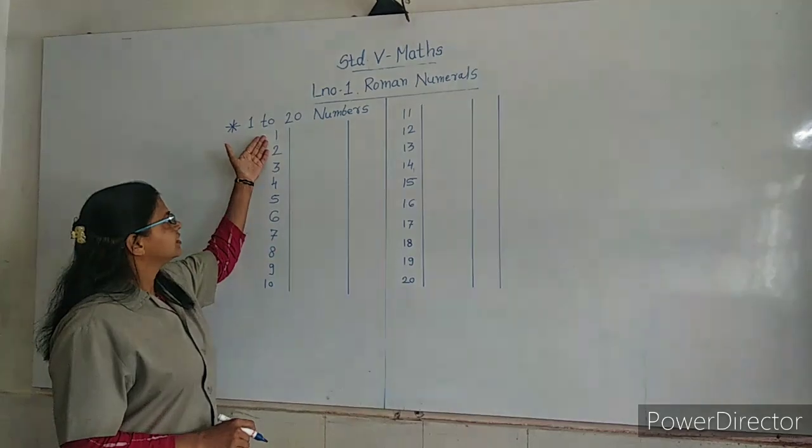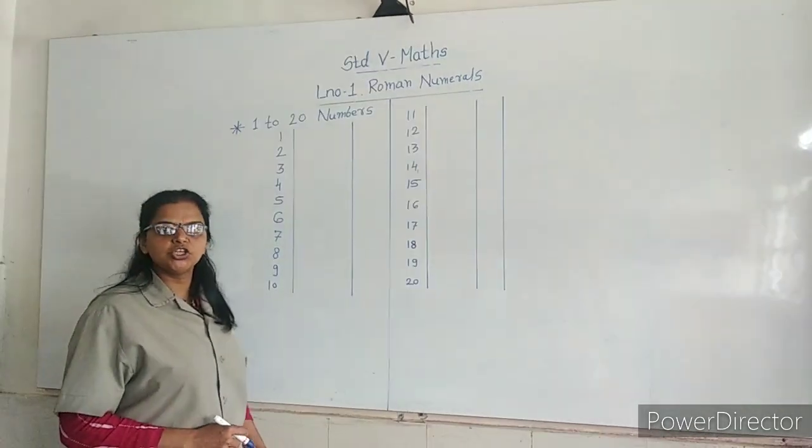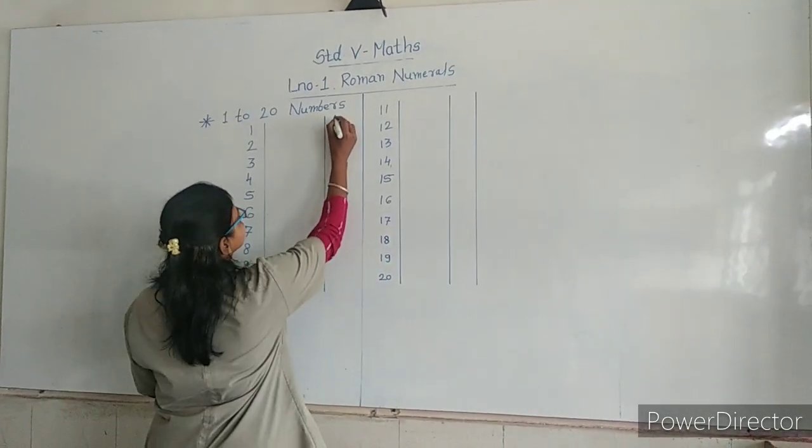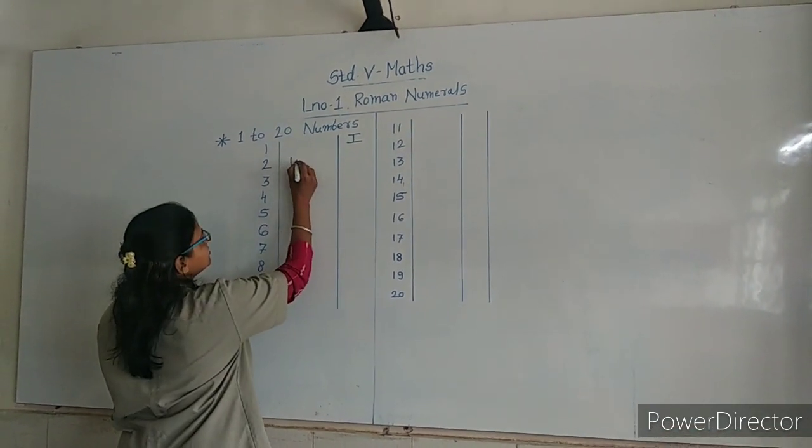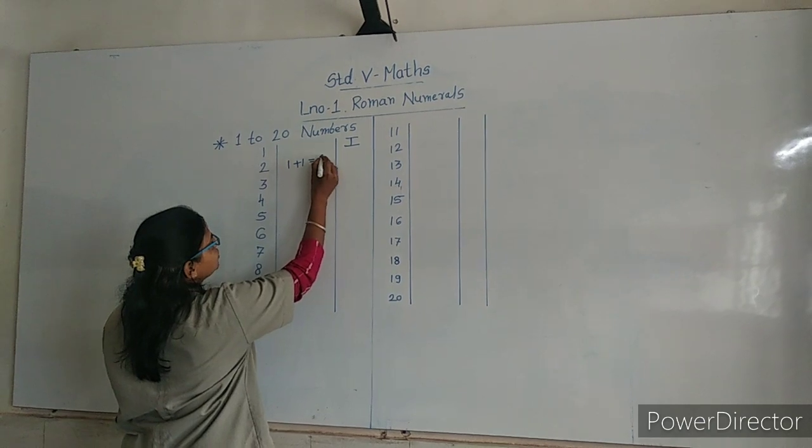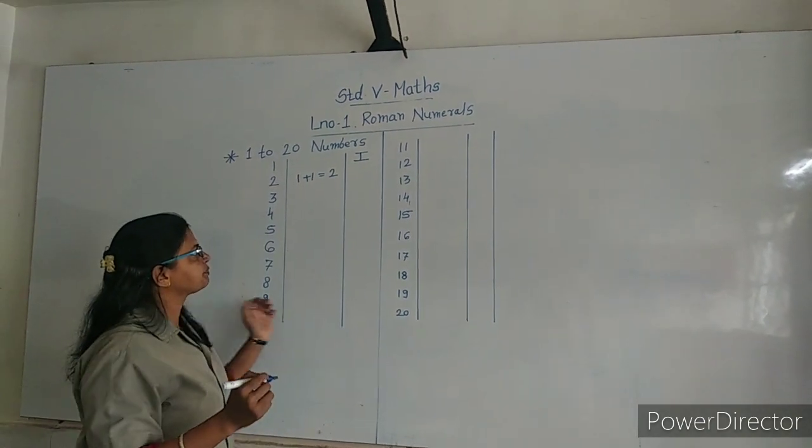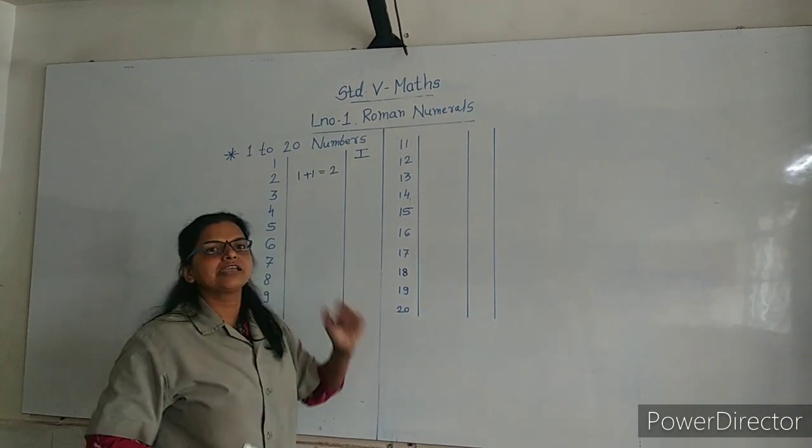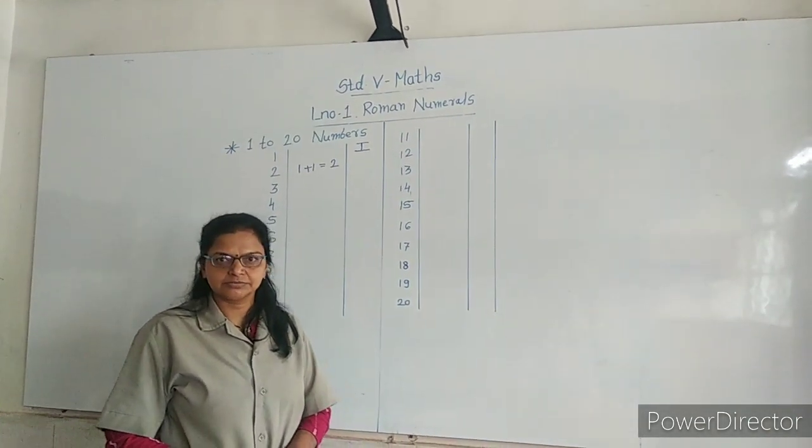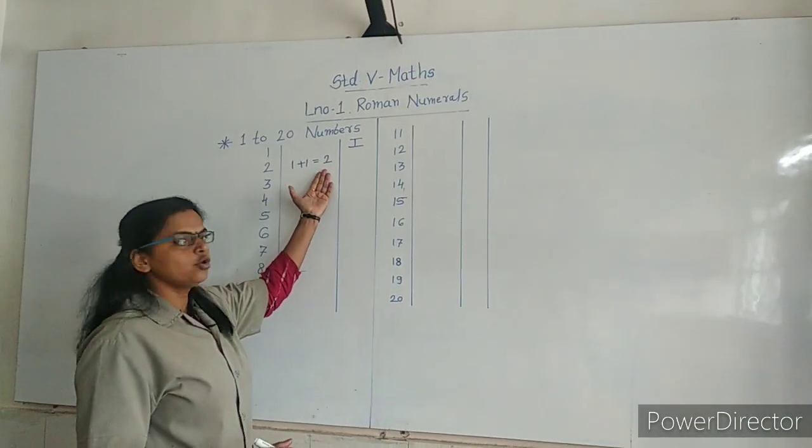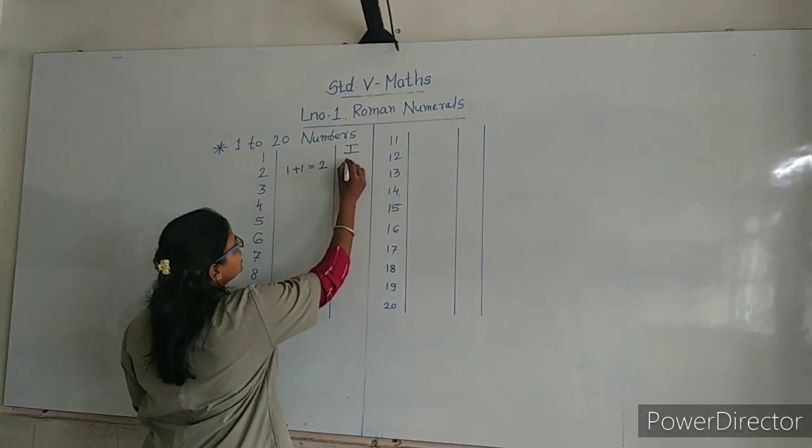1: I is the symbol used for 1. 2: 1 plus 1 is equal to 2. I can be repeated 2 times or 3 times. So, 2 is double I (II).